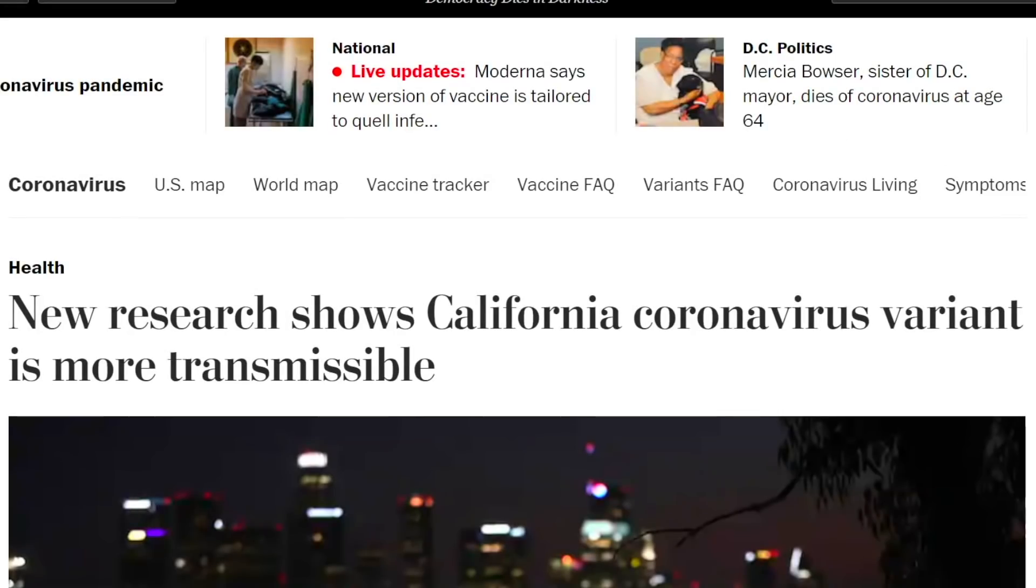So while some headlines state that new research is showing that the California coronavirus variant is more transmissible, it seems as though when you dig down deeper, you'll find that that increased transmissibility can be mitigated with measures that are already in place, and that the vaccine rollout both with the Pfizer and Moderna, soon to be joined with the Johnson and Johnson, will mitigate further transmission and reduce hospitalizations and death.